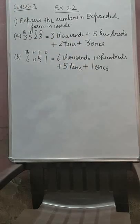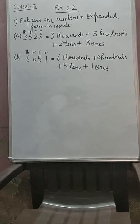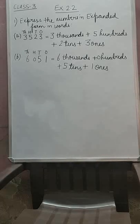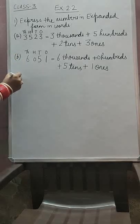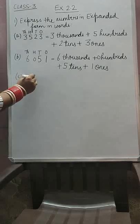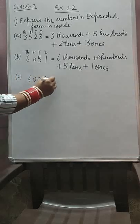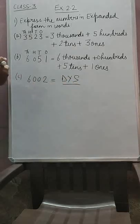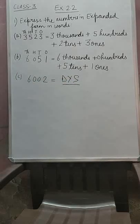Similarly, you can try C part yourself. C part is 6, 0, 0, 2 — do yourself. DYS means do yourself. So we are coming to question number 2 now.